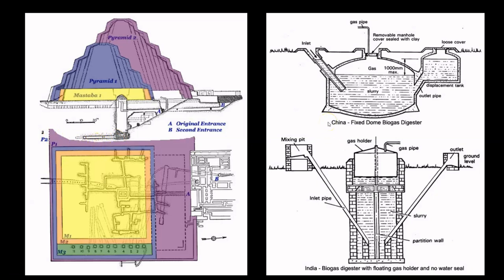Let's compare that to the modern apparatus for the production of methane gas, which is a biogas digester. You will see those exact same components: your inlet shaft leading into your primary digestion chamber, and the digested material is removed through your displacement shaft leading out to the south — very similar components to what we see in the Step Pyramid of Saqqara. The chemical manufacturing process involves cattle manure, agricultural scrap material, and water, mixed together to create a slurry in your mixing pit.